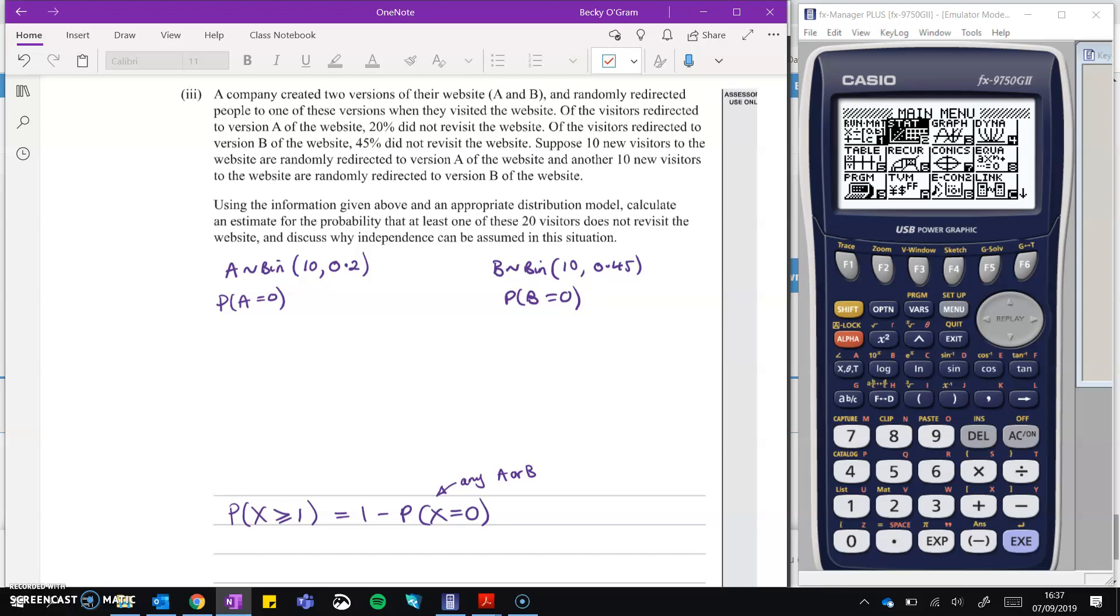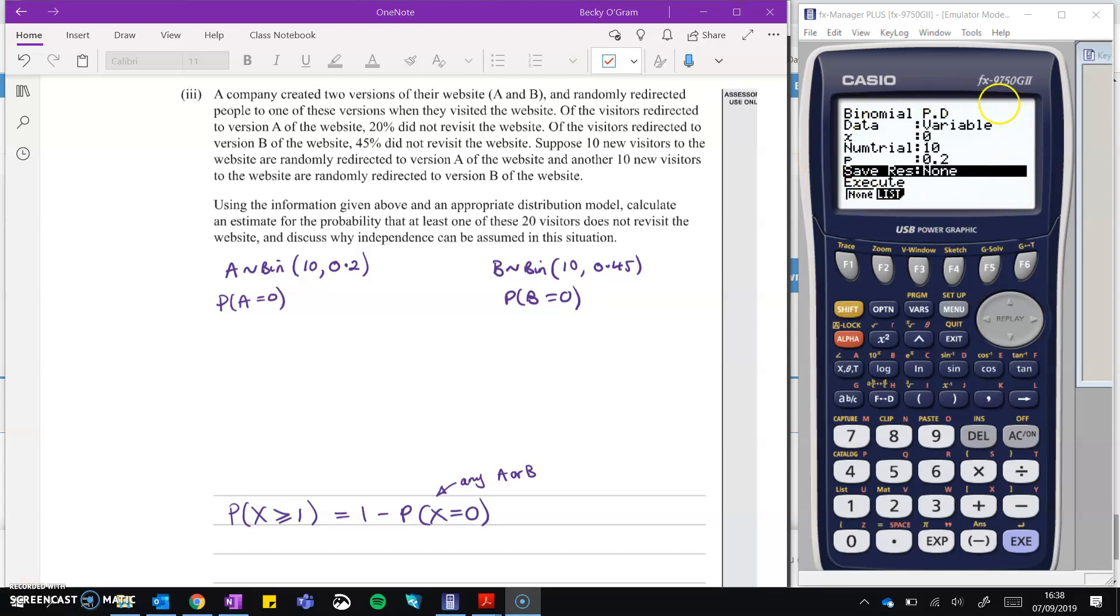I want to work out the probability of getting none on A and the probability of getting none on B, so none that did not revisit the website. So we go over to our stats menu, and I've gone over and put in the details for binomial at a point, X equals zero, number of trials is 10, probability 0.2. So now our probability is 0.1074. And if we go and do the same for B, we just need to change our probability to 0.45.